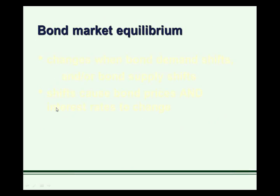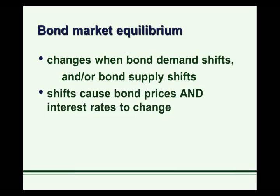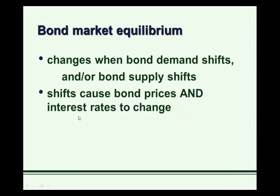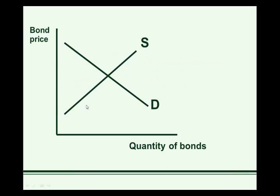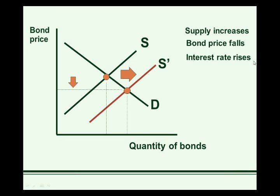With all these factors, we can get shifts in bond demand and bond supply. When there's a shift in bond supply or bond demand, we'll get a new equilibrium bond price, and that will correspond to a new equilibrium level of interest rates. So here's our bond market equilibrium — supply and demand intersect. If supply shifts to the right, we would actually expect bond price to fall and interest rates to rise. So if we observe rising interest rates, one of the possible reasons is an increase in bond supply.